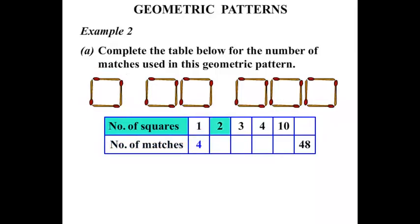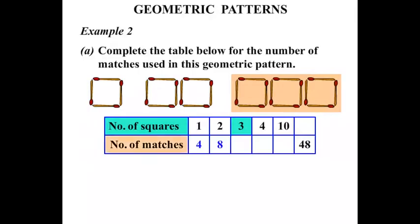When there were two squares, the number of matches required is eight. Three squares — the number of matches required is twelve. So to go from the number of squares to get the number of matches, it looks like we are multiplying by four.